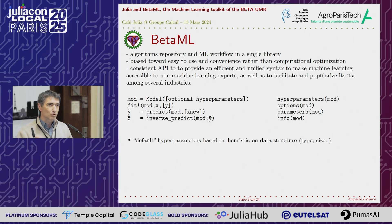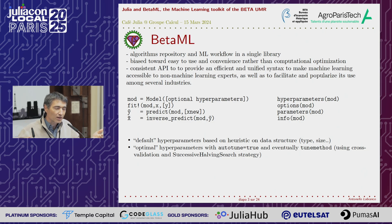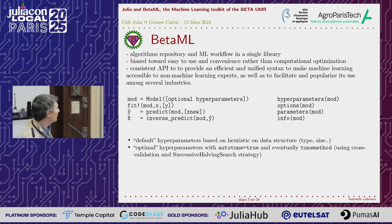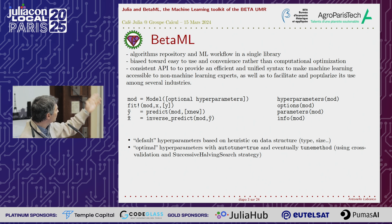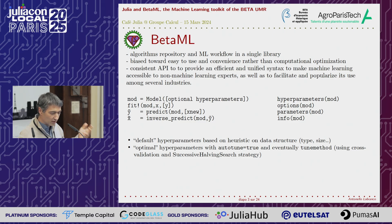If you want hyperparameters really adapted to your data, we also have an autotune tool. You run an autotuning method based on cross-validation, and you can choose your strategy or use the default one. It's a really simple way to explore your models.